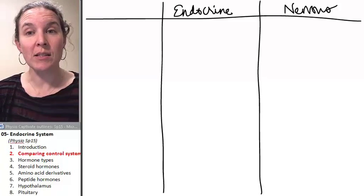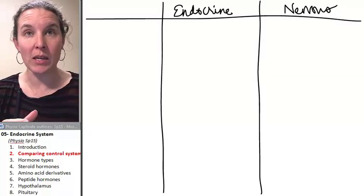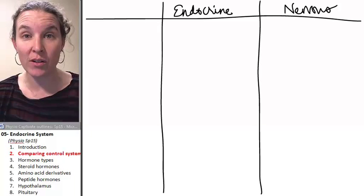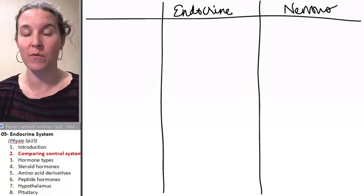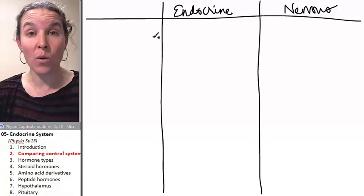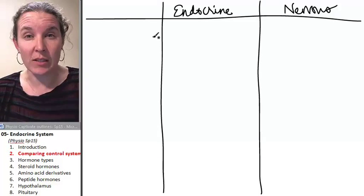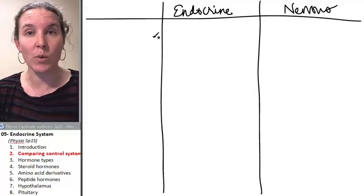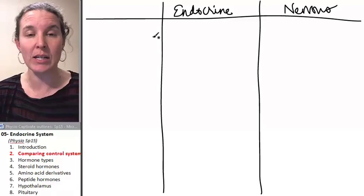Because both the endocrine systems and the nervous system can act as integrators in various physiological pathways, you should know what the differences are. What are the characteristics that we're going to see in these integrating systems?